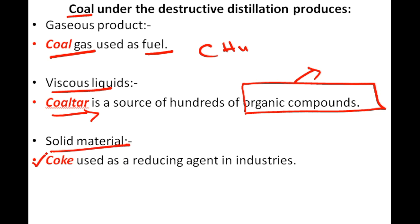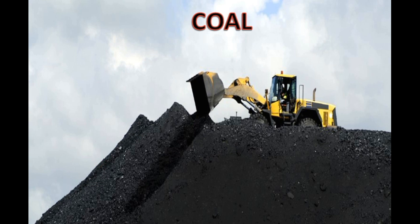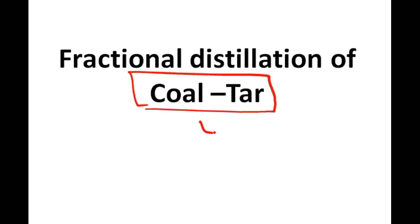Coke is mainly used as a reducing agent in industry. A reducing agent is something that helps in oxidation — anything that causes oxidation is called a reducing agent. Now, the coal tar obtained under the destructive distillation of coal is mainly a liquid. When we have a liquid and want to separate other liquids from it, we use fractional distillation.